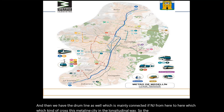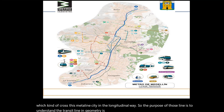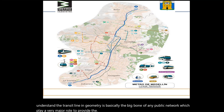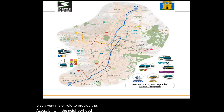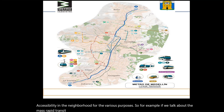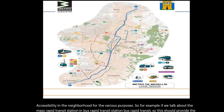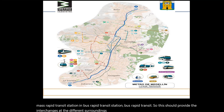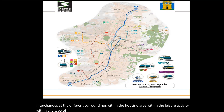The purpose of those lines is to understand the transit line geometry, which is basically the backbone of any public network. It plays a very major role in providing accessibility in the neighborhood for various purposes — for example, mass rapid transit and bus rapid transit stations should provide interchanges at different surroundings within housing areas, leisure activities, any type of business expo, and so on.